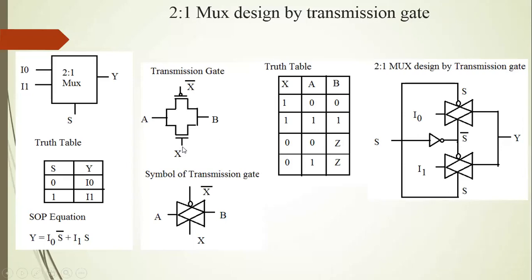The X input is applied on the gate of the N-channel MOSFET and X-bar input is applied on the gate of the P-channel MOSFET. When A input is logic 0 and X input is logic 1, both N-channel and P-channel MOSFETs are in the ON state. Then A input is logic 0, B is also logic 0, and that logic 0 is strong. A input logic 1 and B output logic 1 is also strong.